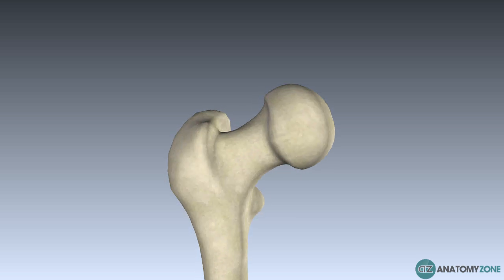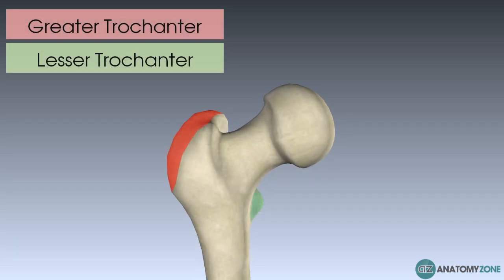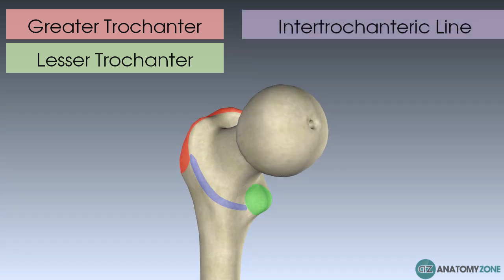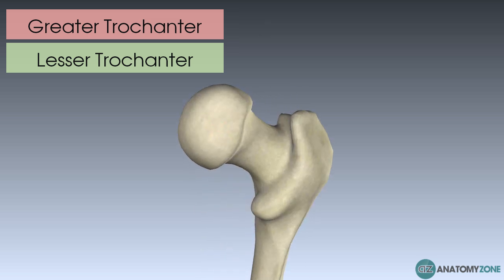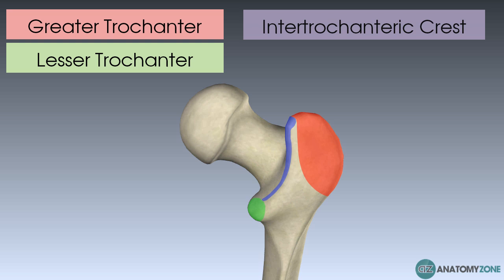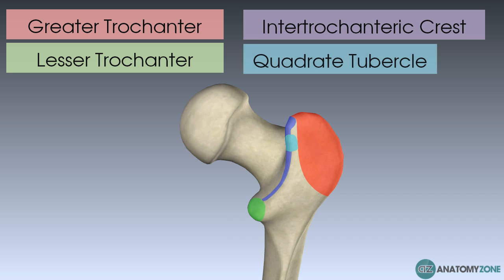The next things to notice are the two bumps — the greater and lesser trochanter. Between these two you have effectively two lines: on the front it's called the intertrochanteric line, and on the back, confusingly, it's called the intertrochanteric crest because it looks more like a crest than a line. Finally, the quadrate tubercle is a small bump two-thirds of the way up the trochanteric crest, and it's the attachment point for quadratus femoris, a small lateral rotator of your hip.